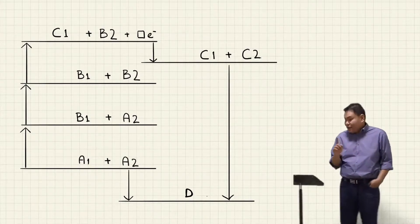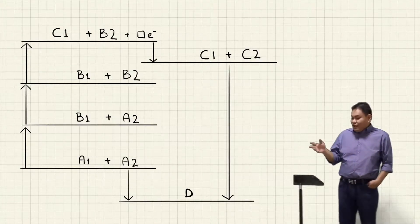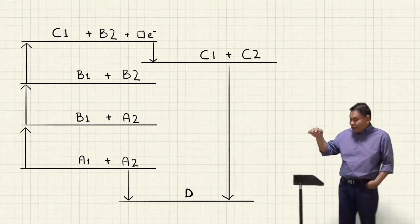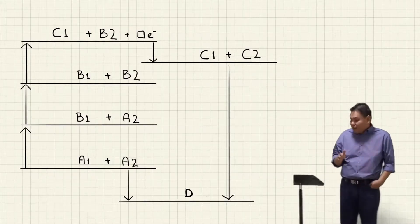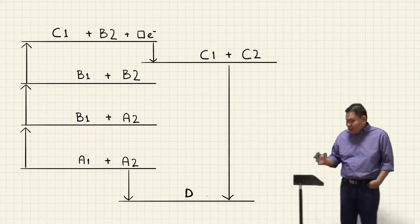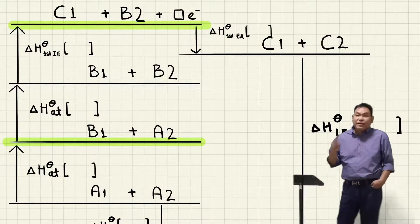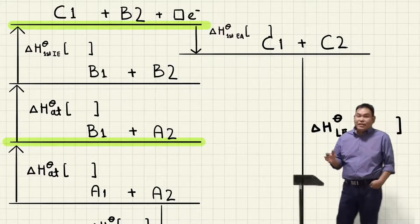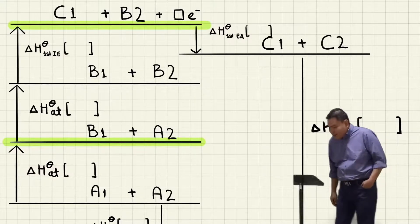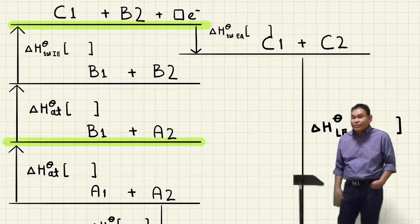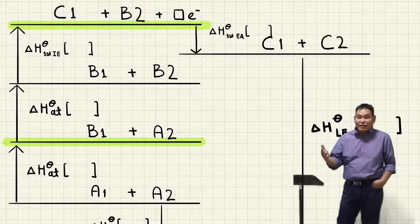This is the pattern when the anion is negative one. It's very important to remember this because the first EA is negative, so C1 plus C2 will be lower than C1 plus B2. Between A1 plus B2 and B1 plus B2 we have two arrows: two delta H atomization and one horizontal line in the middle. B1 plus A2 is because you atomize the metal first, then you atomize the non-metal later.